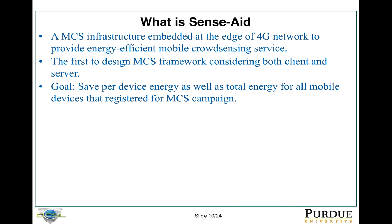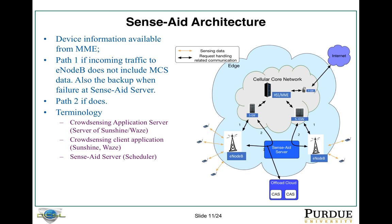What is Sense8? Sense8 is a mobile crowd-sensing infrastructure embedded at the edge of a 4G network. It can provide energy-efficient mobile crowd-sensing service. This is the first framework considering both client and server, and the main goal is to save per-device energy as well as total energy for all devices combined. This is the architecture for Sense8. It sits between the eNodeB and the core network. There are two paths from the eNodeB to the core network: one is through the legacy way, another is through the Sense8 server. When the eNodeB sees mobile crowdsourcing traffic, it goes through the Sense8 server, which offloads the mobile crowdsourcing traffic and forwards the rest back to the core network.